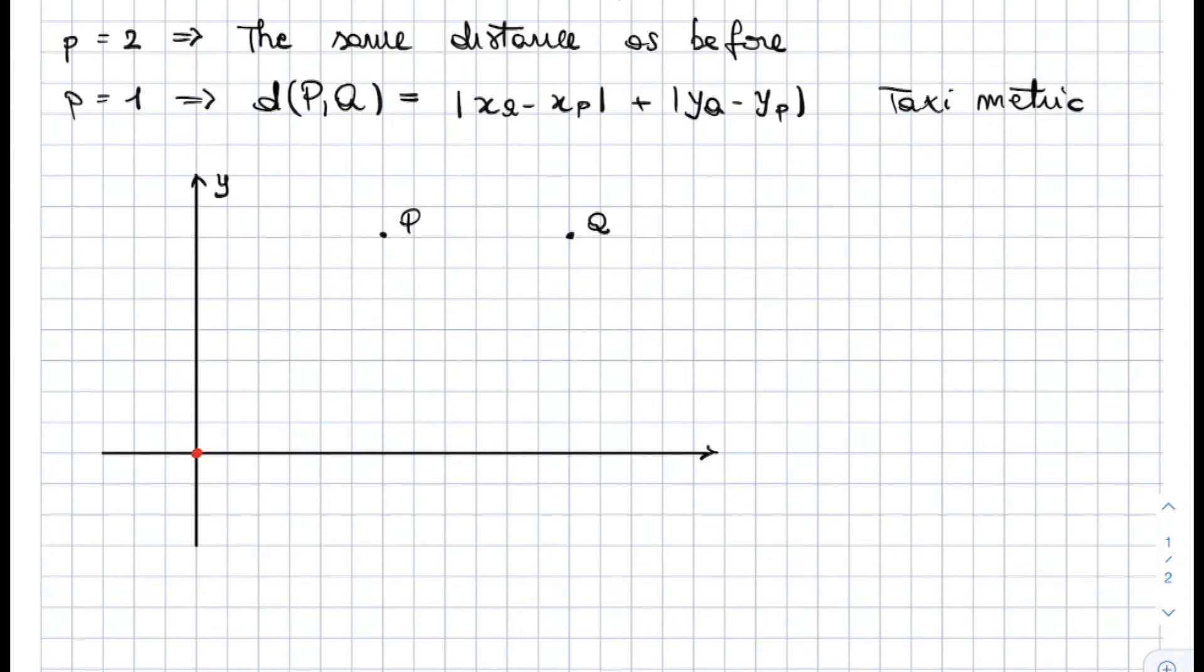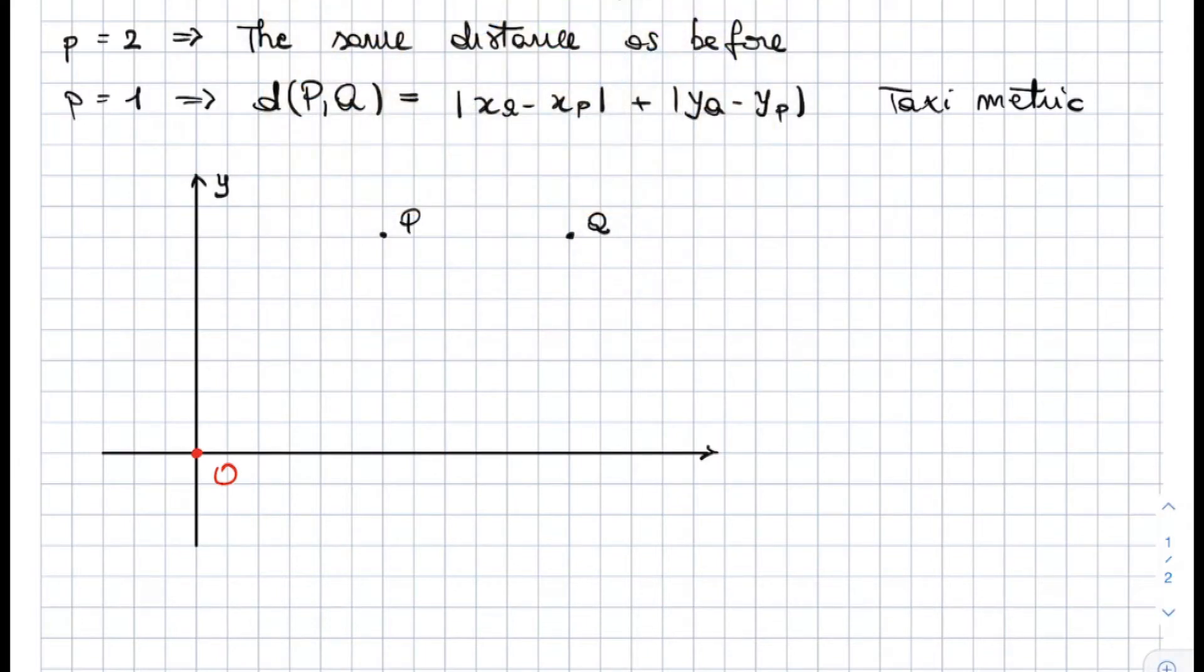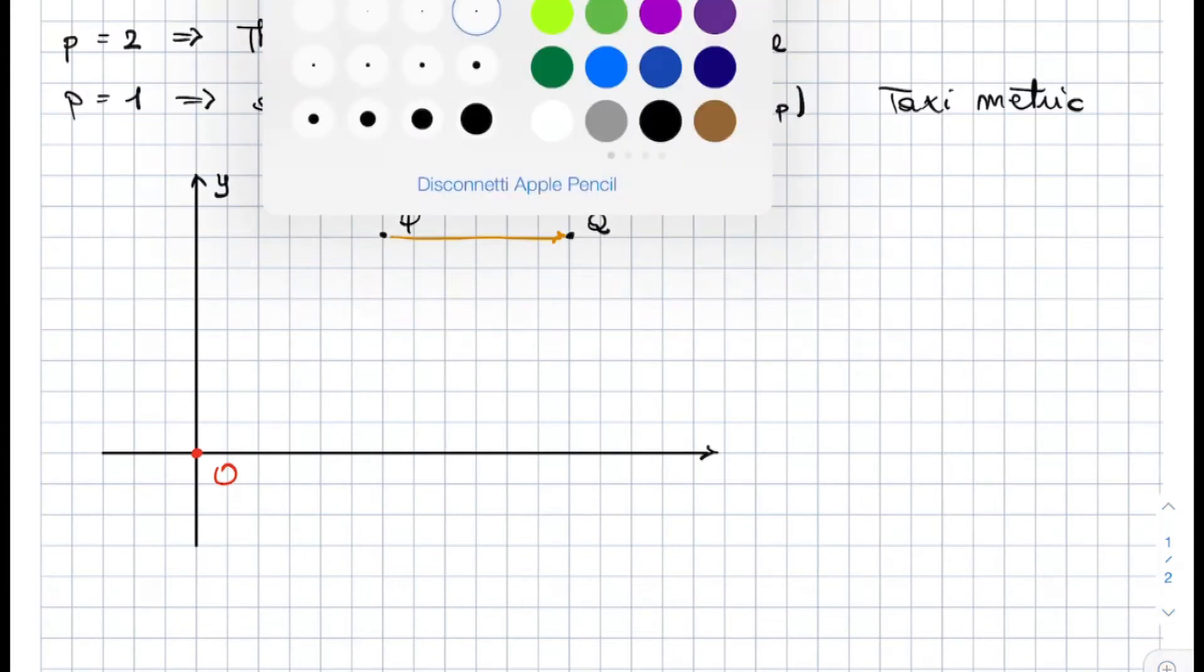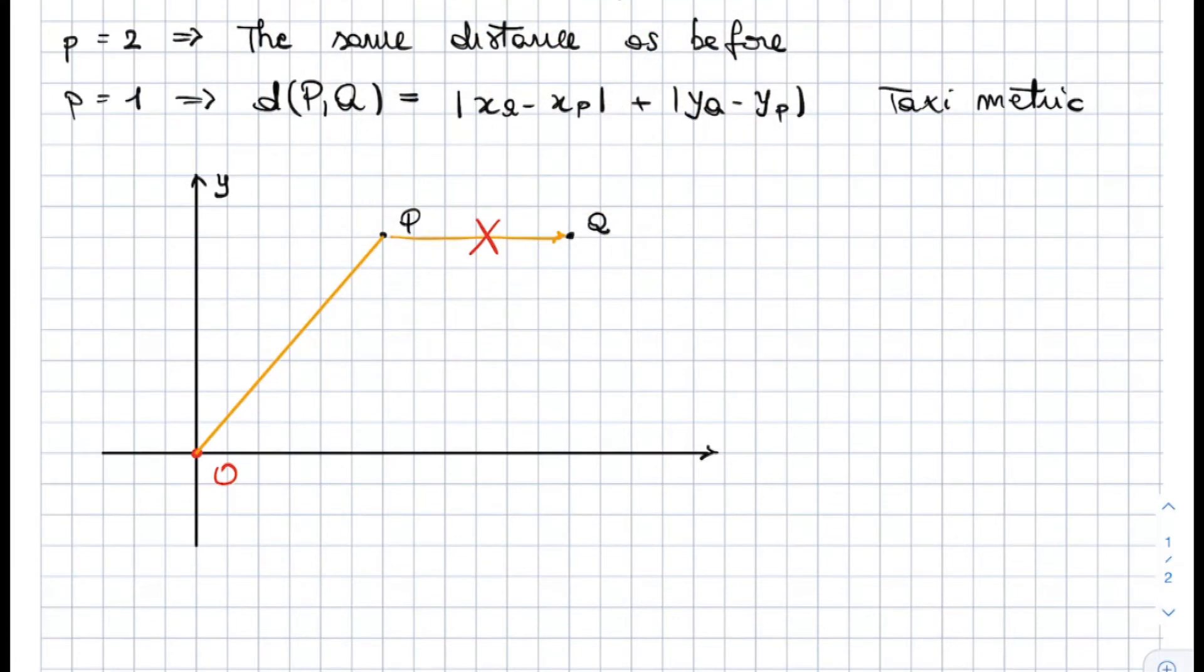So if I want to move from P to Q, I can't go straight in this way, this is not allowed. I need to go through the origin, and then from the origin I need to move to Q. So I need to go in this way, from P to O, and then from O to Q. I cannot move directly from P to Q. Under this restriction,